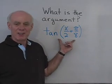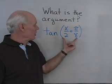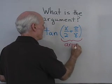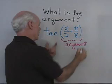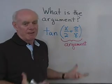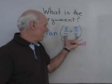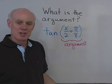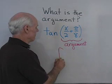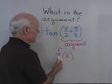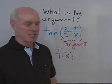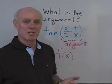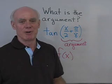Next we want to identify the argument of this function. It's a tangent function, and the argument is what's inside the parentheses. If we had a value of x to substitute in, we could evaluate the function for this value inside the parentheses — the argument. In general, when talking about the argument of a function using function notation, f is the function and the argument is what's inside the parentheses — whether it's x, x squared plus 5, or 2x minus 1. Whatever's inside the parentheses is the argument; it's the thing that the function operates on.